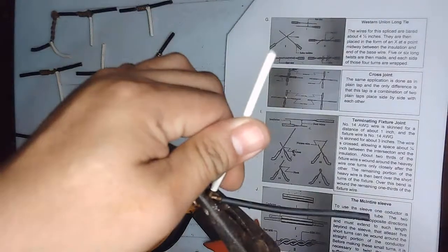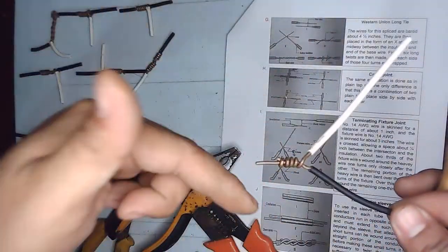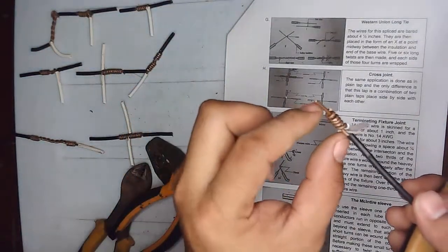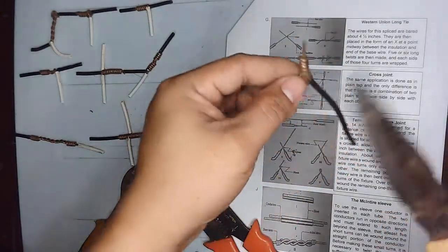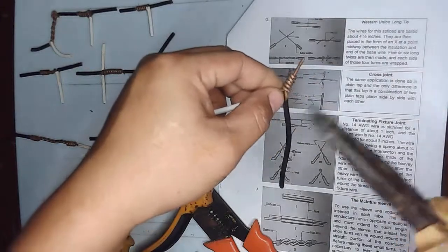We are almost done. After wrapping around the longer wire, as you can see the shorter bare wire has a remaining wire here. What you're going to do to make it locked...